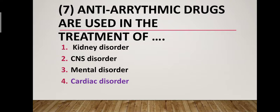Question number seven: Antiarrhythmic drugs are used in the treatment of which disorder? Option one: kidney disorder. Option two: CNS disorder. Option three: mental disorder. Option four: cardiac disorder. Correct answer is option four — cardiac disorder. The name itself tells us: arrhythmia means irregular heart rhythm, which is a cardiac condition. Antiarrhythmic drugs are used in the treatment of cardiac disorder.